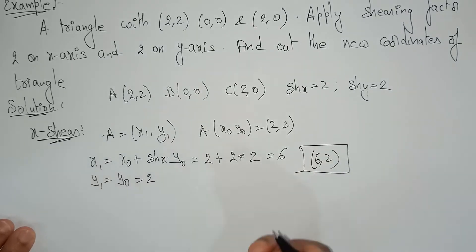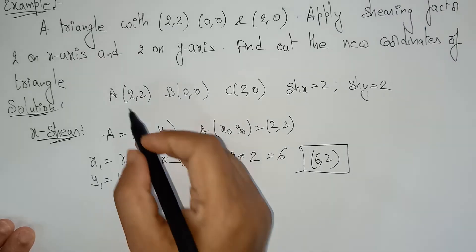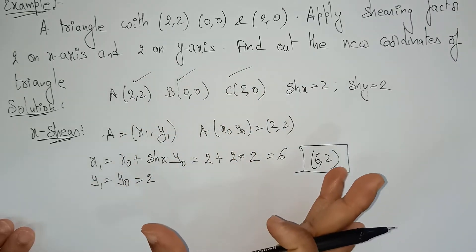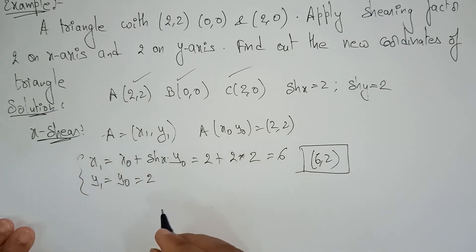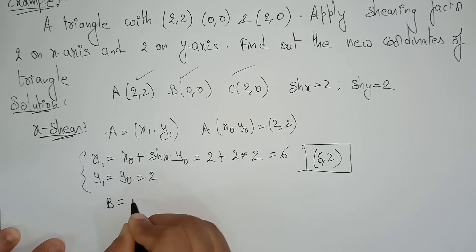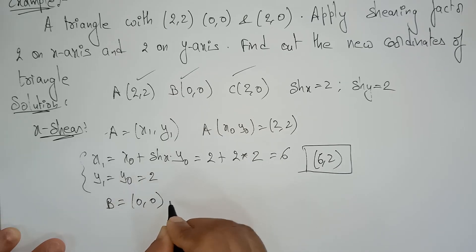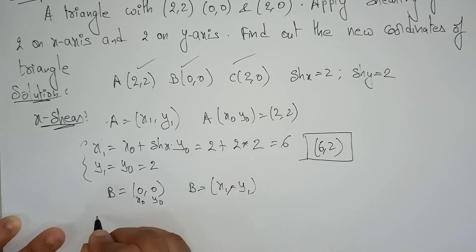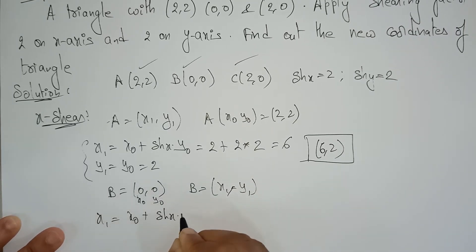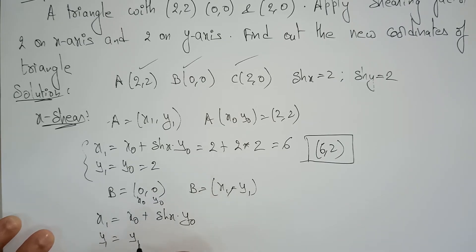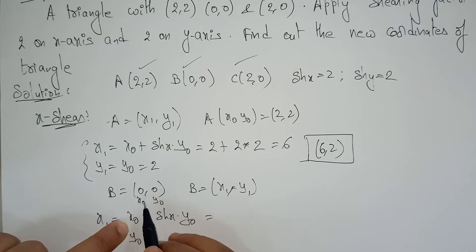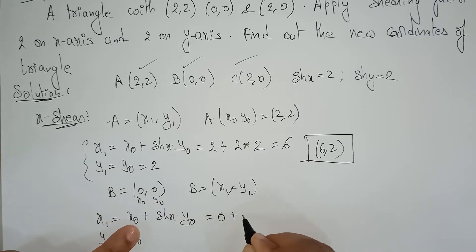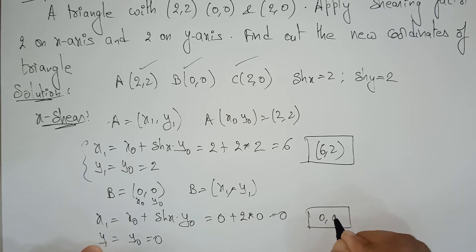Now for coordinate B (0,0), I need to find the new coordinates. Let the new coordinates be (x1, y1). Applying the formula: x1 = x0 + SHx × y0 = 0 + 2×0 = 0, and y1 = y0 = 0. So the new coordinates for B are (0,0) — they remain the same.